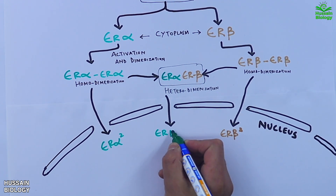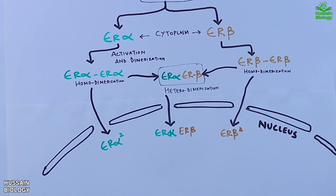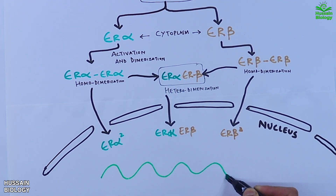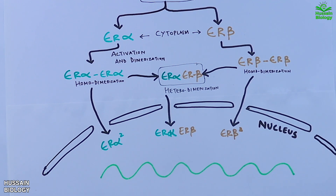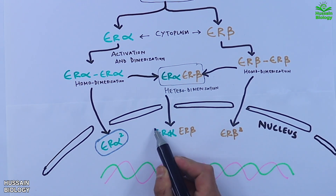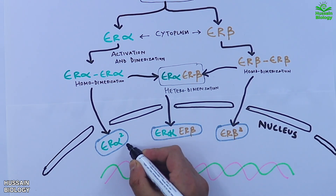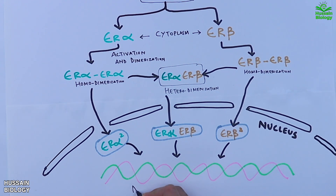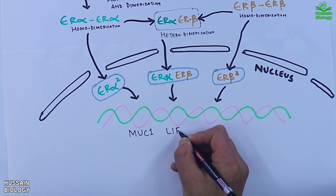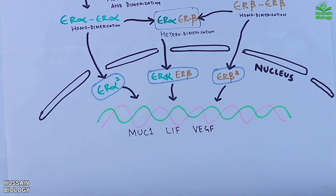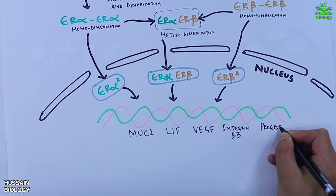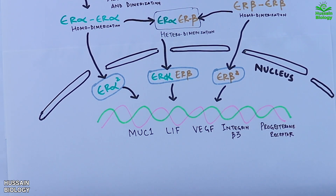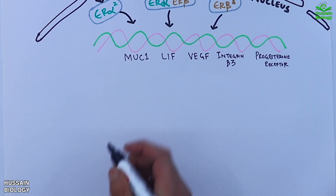Inside the nucleus, these dimerized complexes act as transcription factors, binding to specific DNA sequences. Here they regulate the expression of several crucial genes, including MUC1, LIF, VEGF, integrin beta 3, and the progesterone receptor. Each of these genes plays an essential role in implantation.